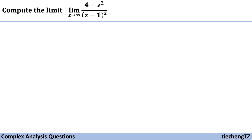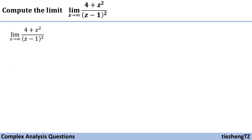This video introduces how to compute the limit of the function (4 + z²) / (z - 1)² when z approaches positive infinity. First, if we try to substitute positive infinity into both the numerator and denominator, we see there seems to be no solution.